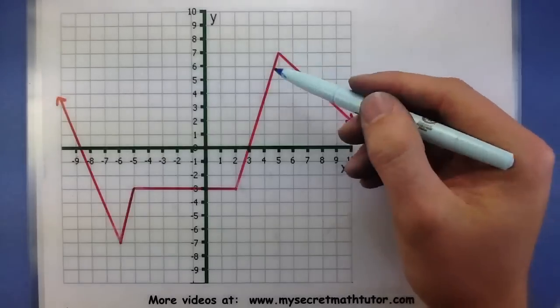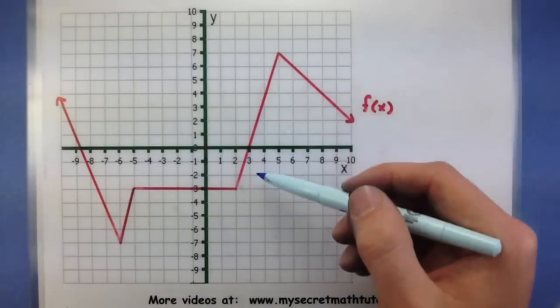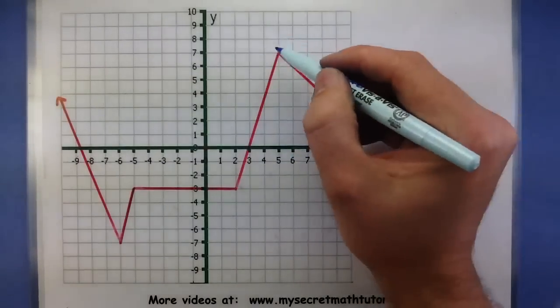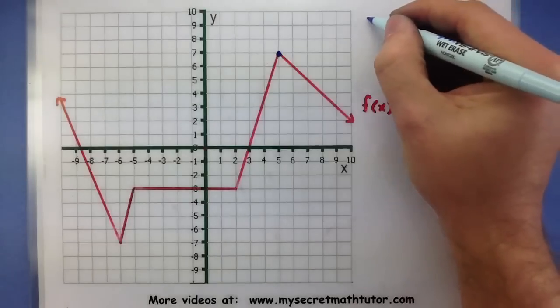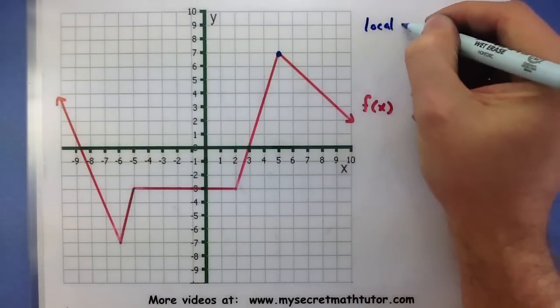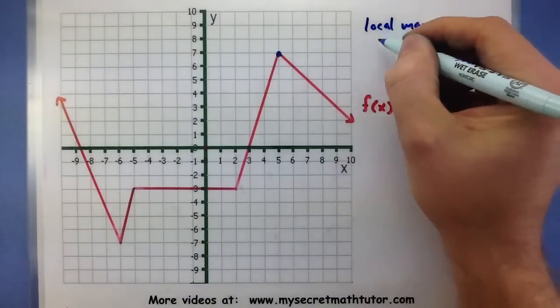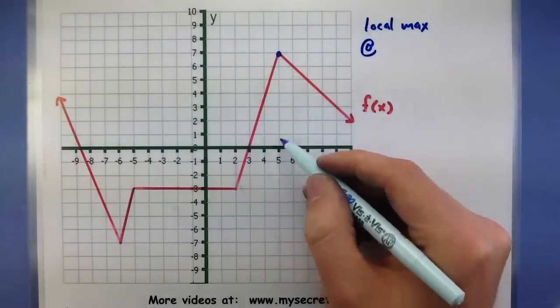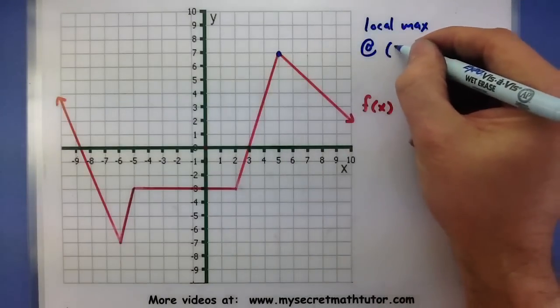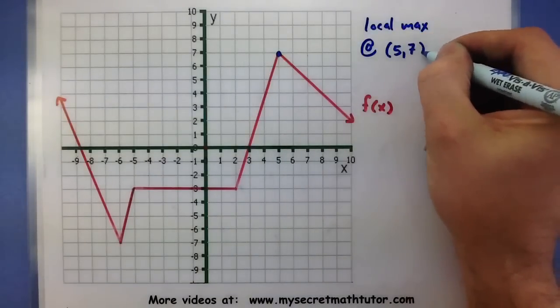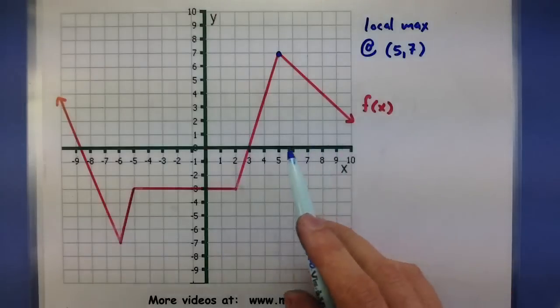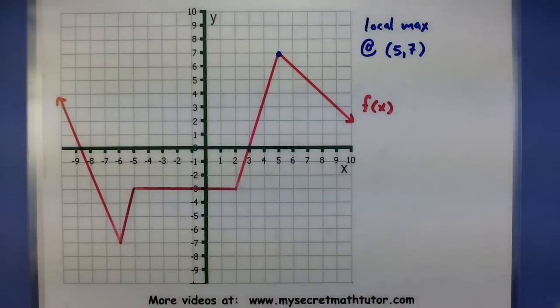So here I can see I have a high point maybe on this small interval between, say, 4 and 7. So local max, looks like I have one at (5, 7). And that is my only local maximum.